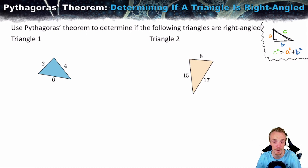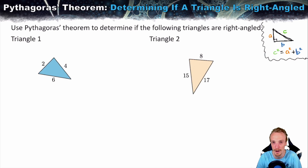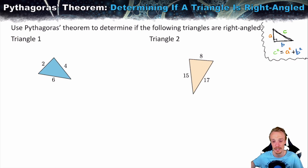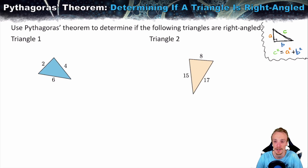To use Pythagoras theorem to determine whether a triangle is right-angled, you actually need all three side lengths of the triangle. You can see here there are two triangles, and we do know all three side lengths for both.